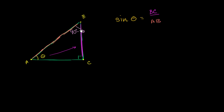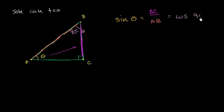What is that ratio if we look at angle B? For angle B, BC is the adjacent side and AB is the hypotenuse. From angle B's perspective, this is adjacent over hypotenuse. What trig ratio is adjacent over hypotenuse? That's cosine. SOH-CAH-TOA: sine is opposite over hypotenuse, cosine is adjacent over hypotenuse, and tangent is opposite over adjacent. So from angle B's perspective, taking BC as its adjacent side and AB as the hypotenuse, this is adjacent over hypotenuse — the cosine of this angle. So that's equal to the cosine of 90 degrees minus theta.